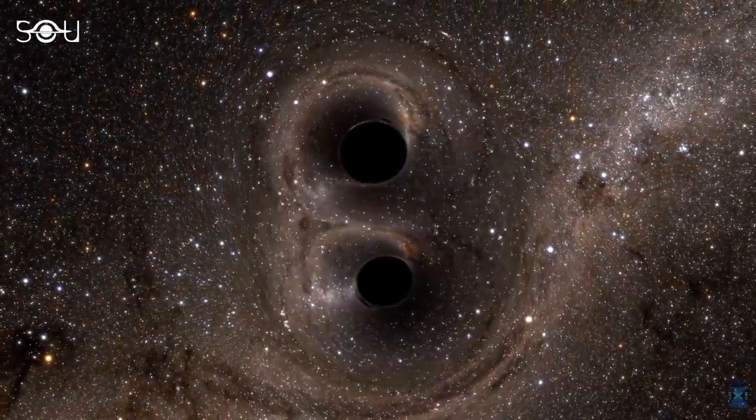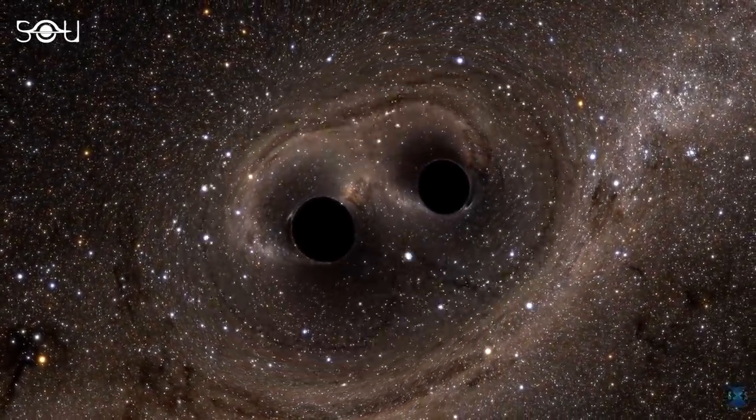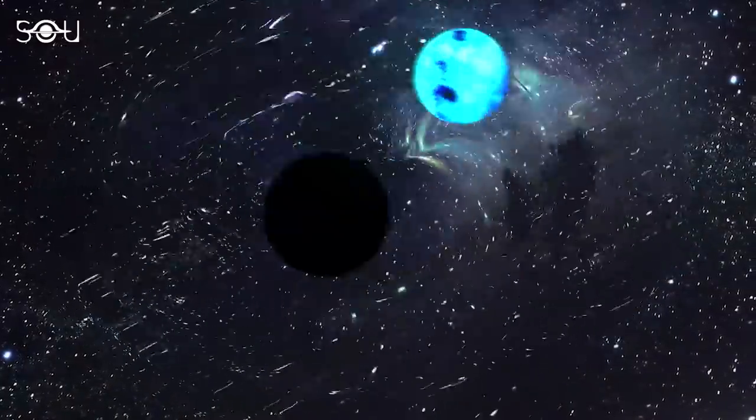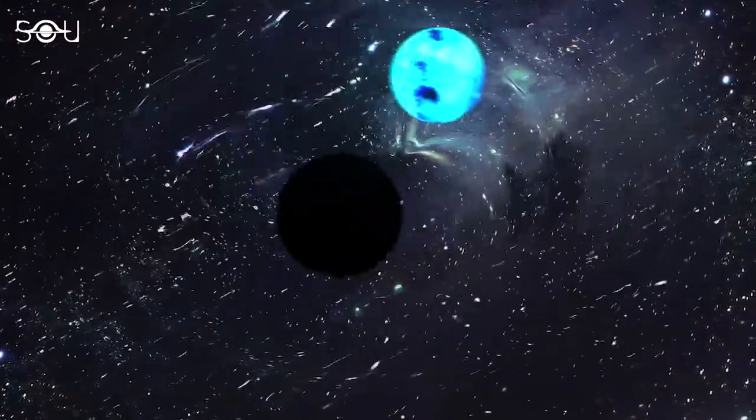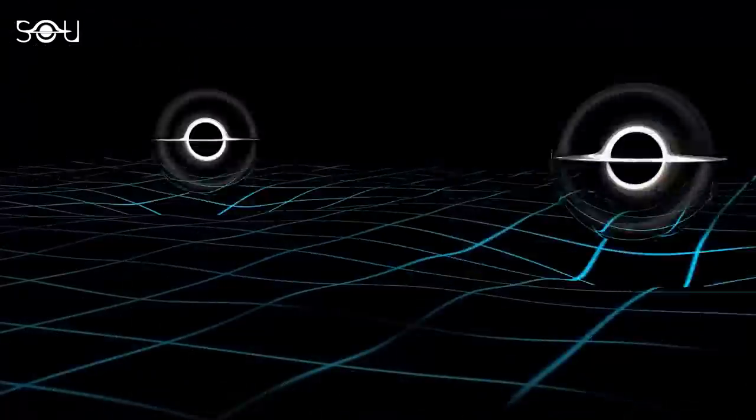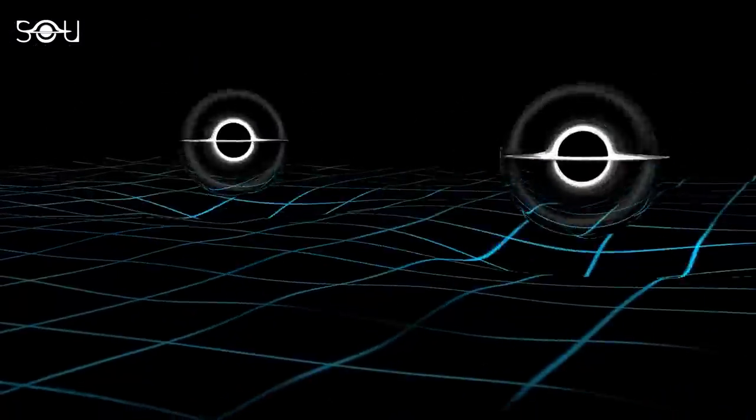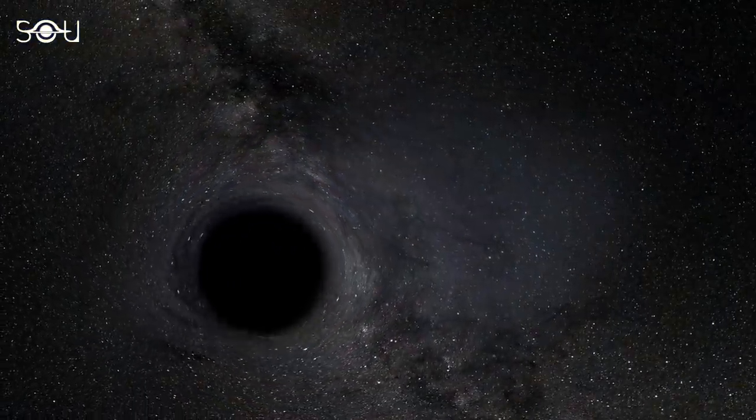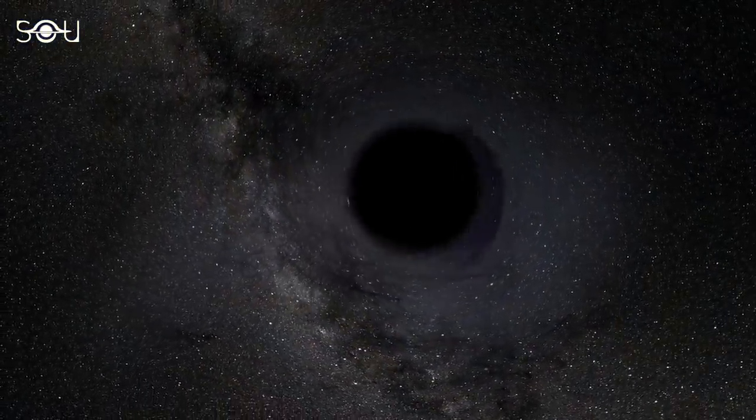So far, we have only discovered stellar mass black holes in binary systems, often paired up with neutron stars. Black holes are easier to detect in binary systems because their interactions with their partners can generate light or gravitational waves whose properties signal a black hole's presence. In contrast, isolated black holes lack such partners to help reveal their existence.